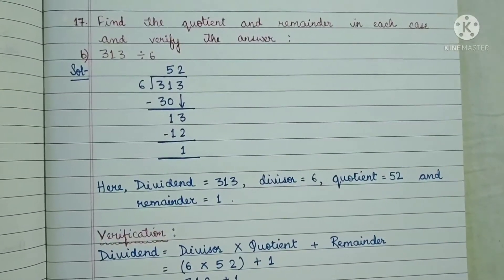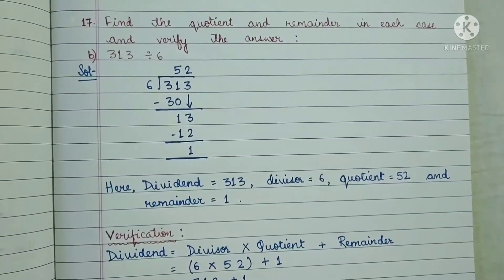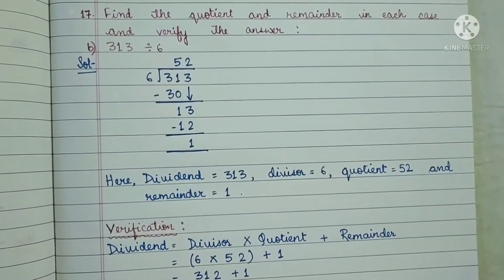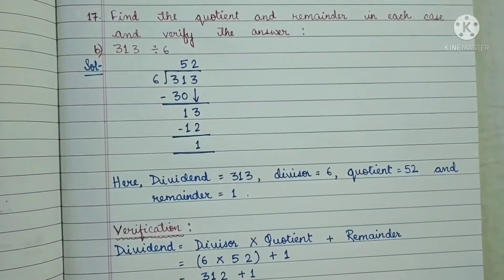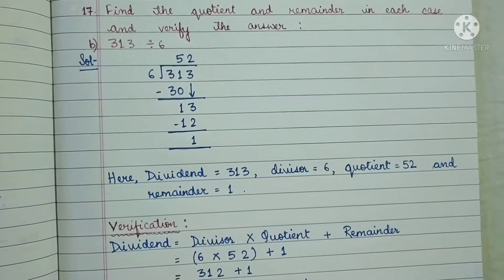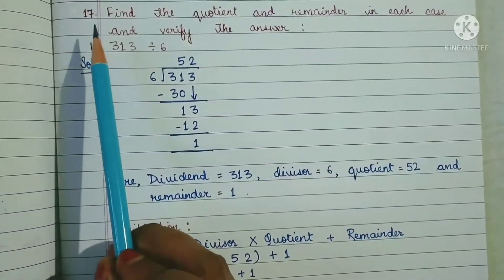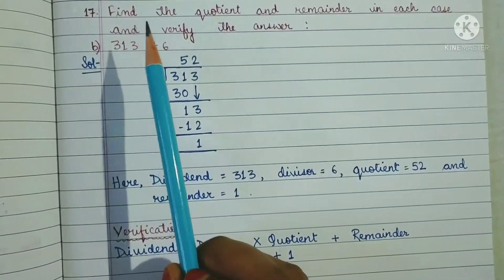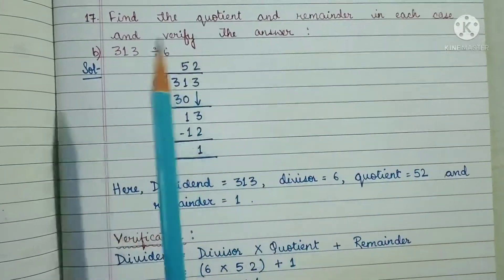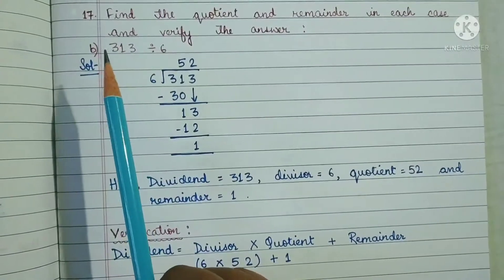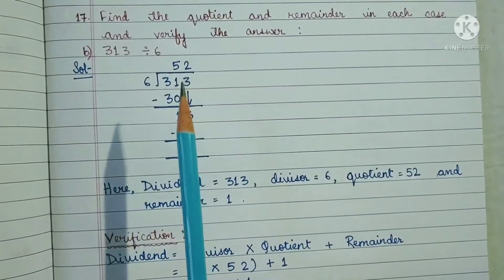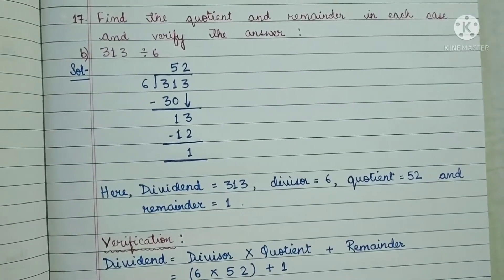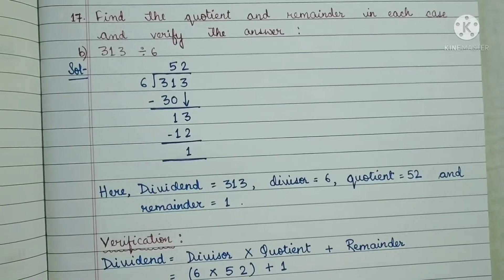Hello dear students, welcome back. In this video we will learn how to verify our answer of division — how to verify whether our question is correct or not. For that I have taken question number 17 of exercise 5.6. Question number 17 says: find the quotient and remainder in each case and verify the answer. We are asked to find the quotient and remainder and then verify whether our division is correct or not.